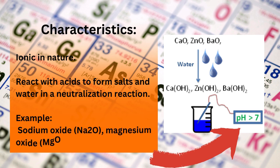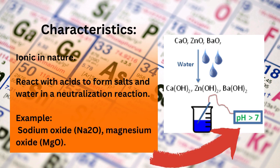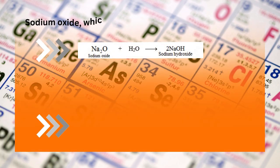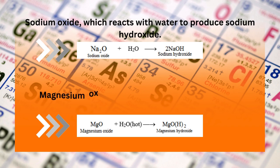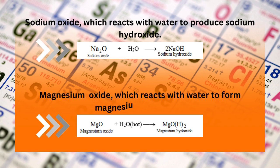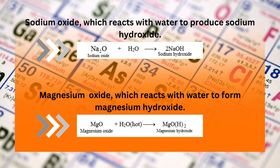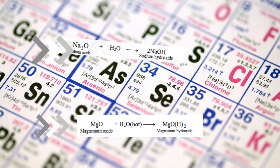Examples of metallic oxides include sodium oxide (Na2O) and magnesium oxide (MgO). Sodium oxide reacts with water to produce sodium hydroxide, and magnesium oxide reacts with water to form magnesium hydroxide.